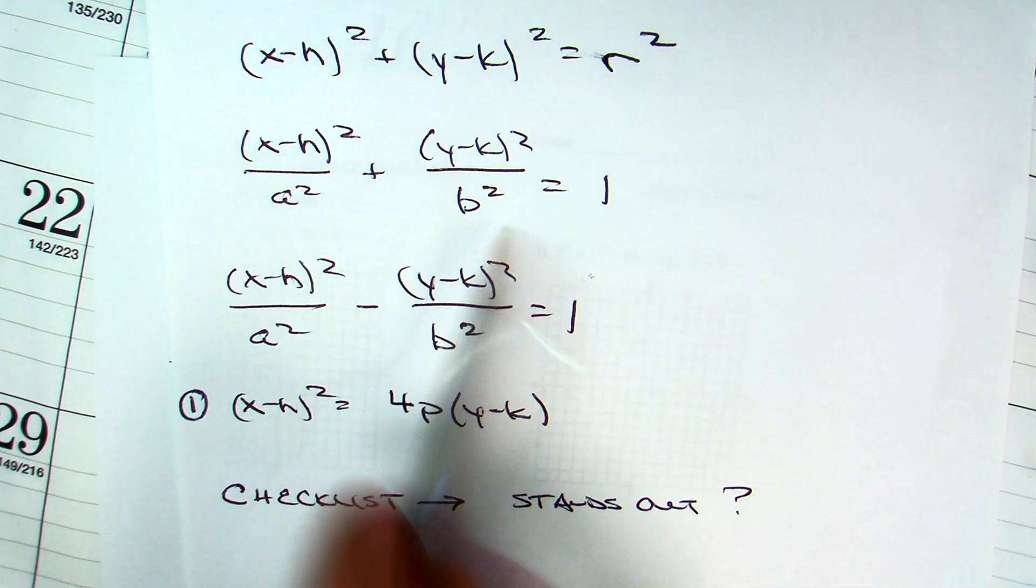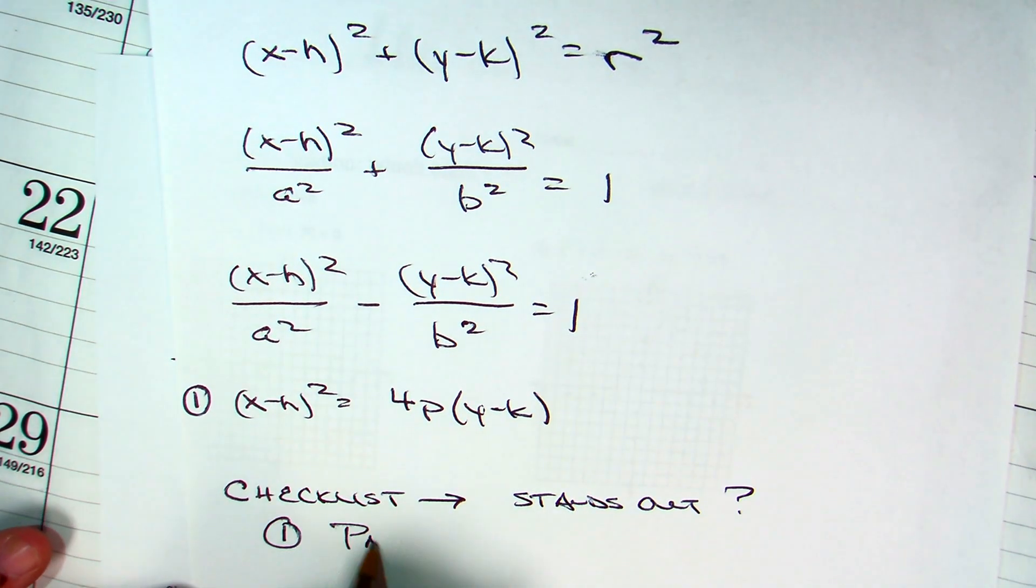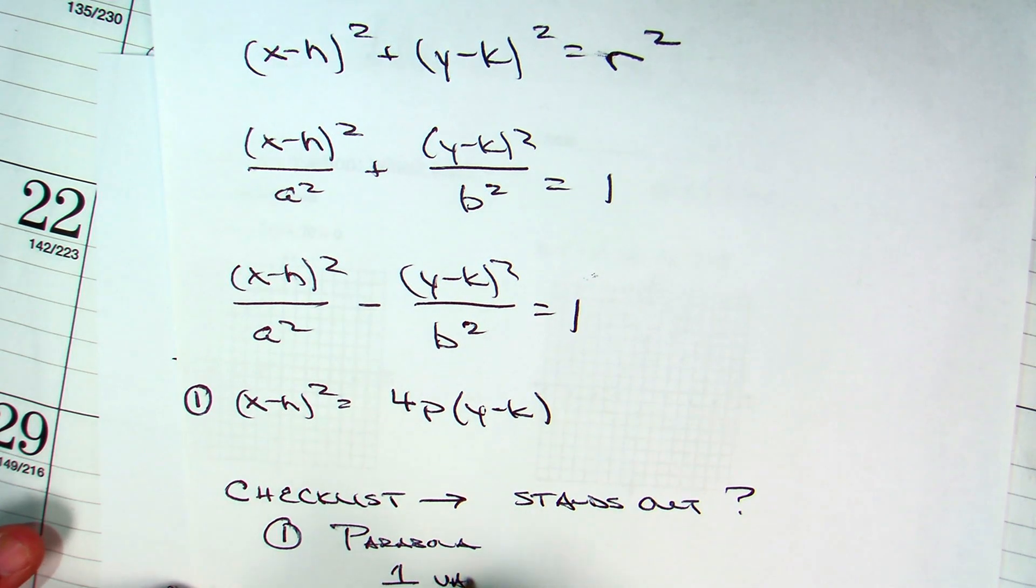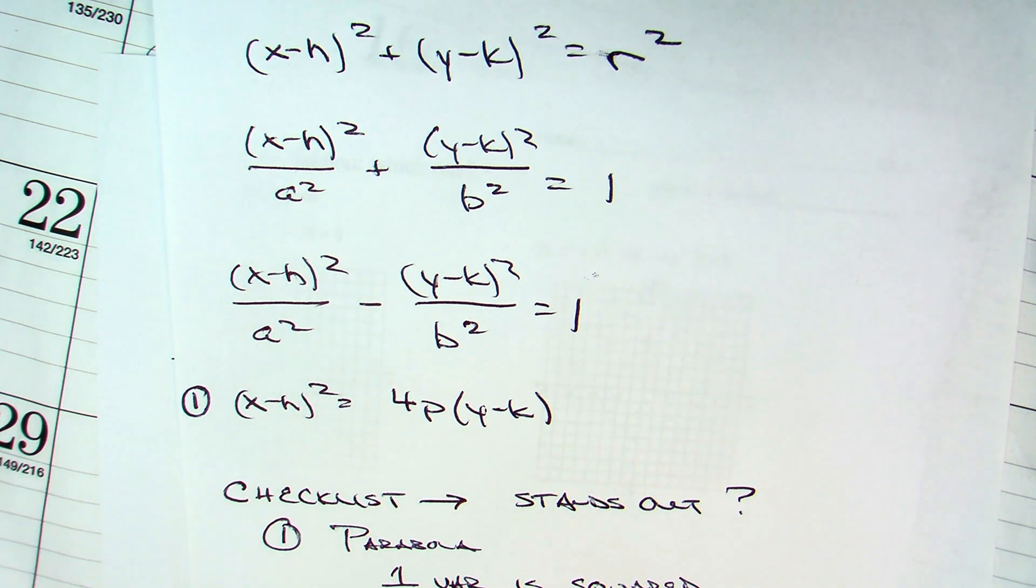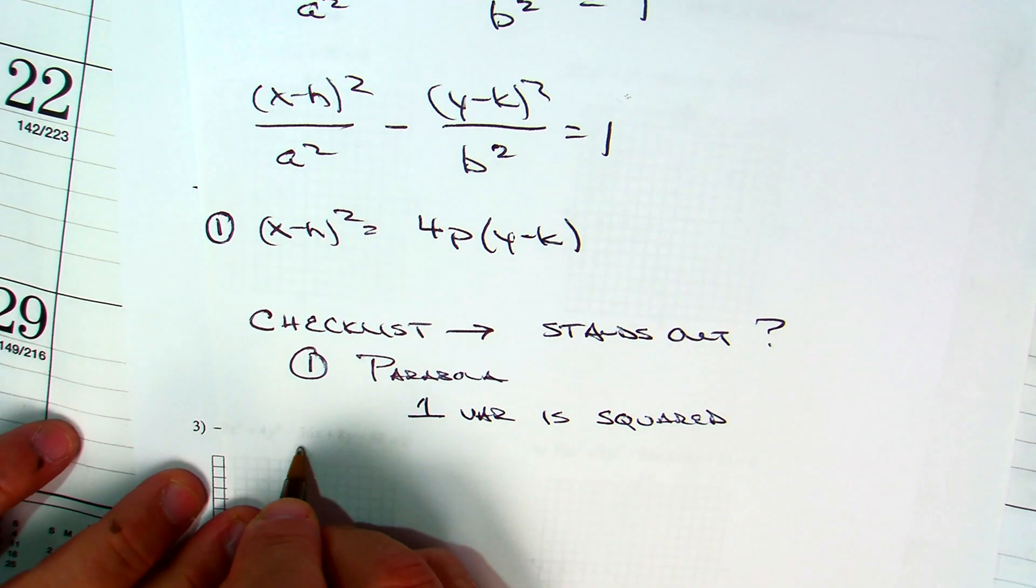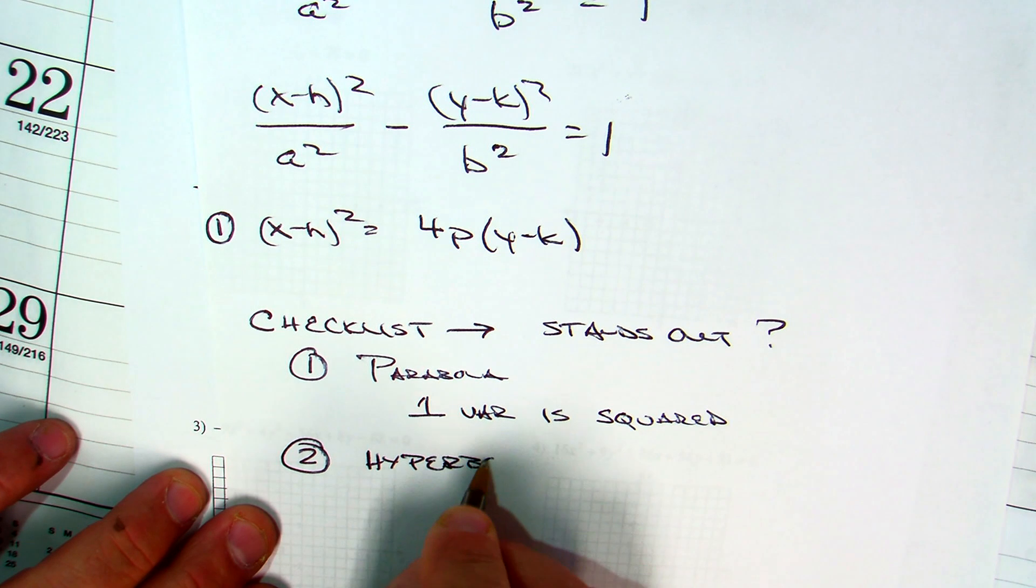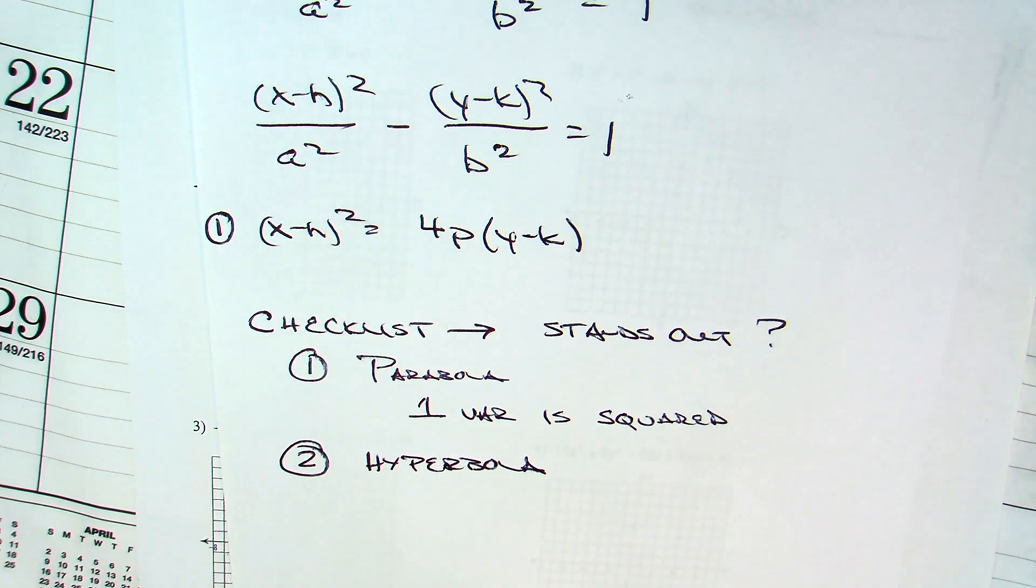All right, so I'm going to say that number one is the parabola, because only one variable is squared. Okay? Number two is the hyperbola.